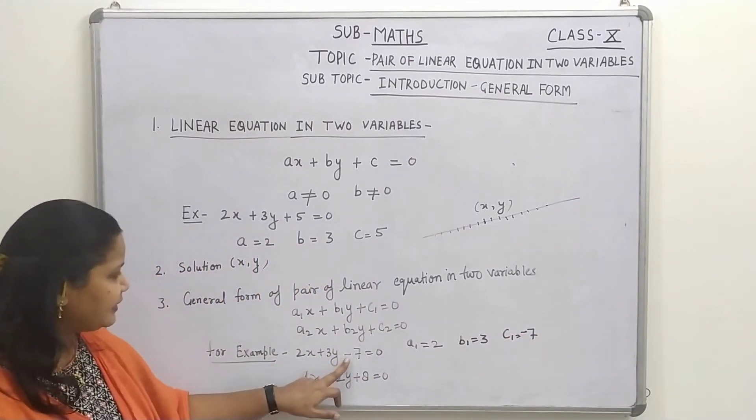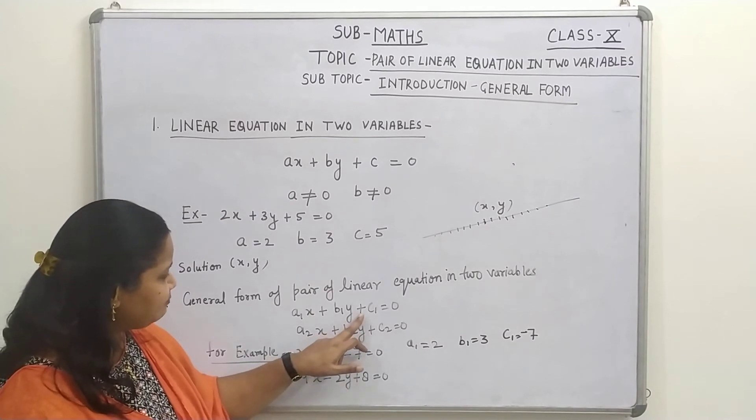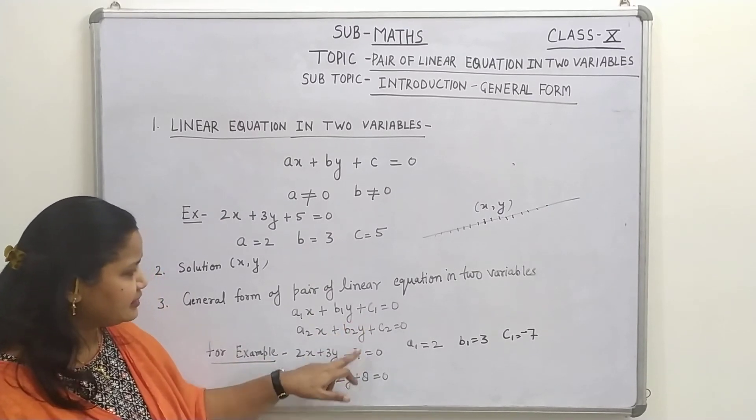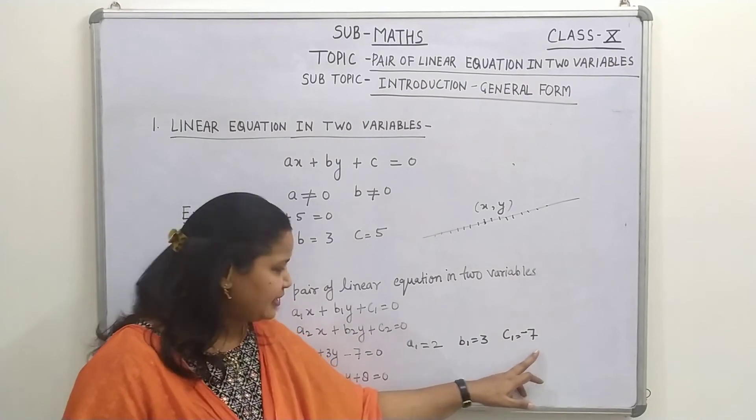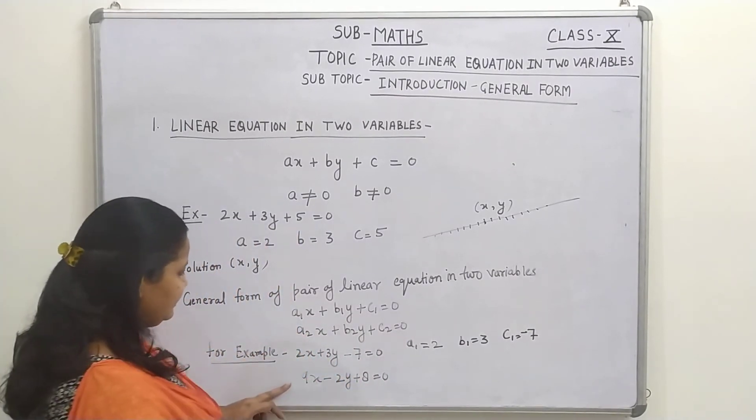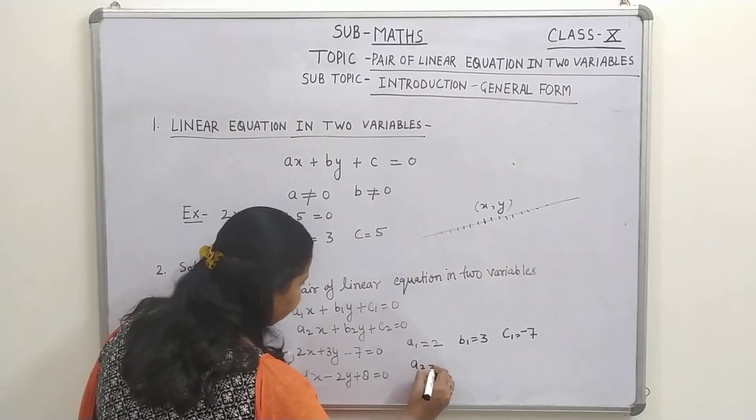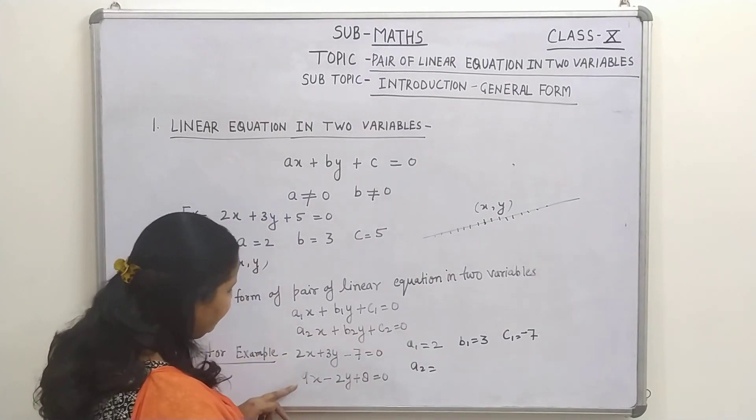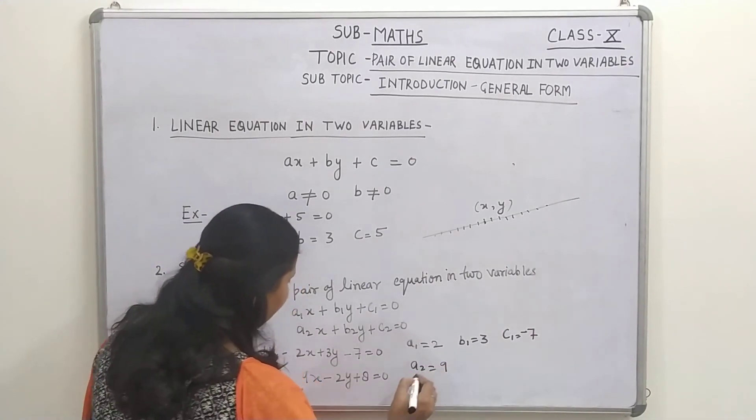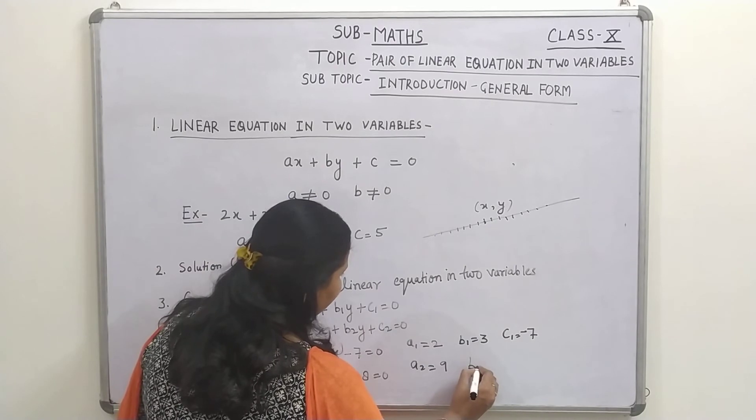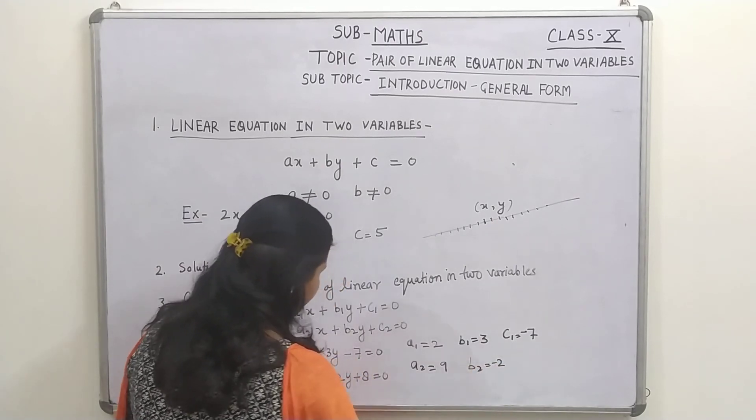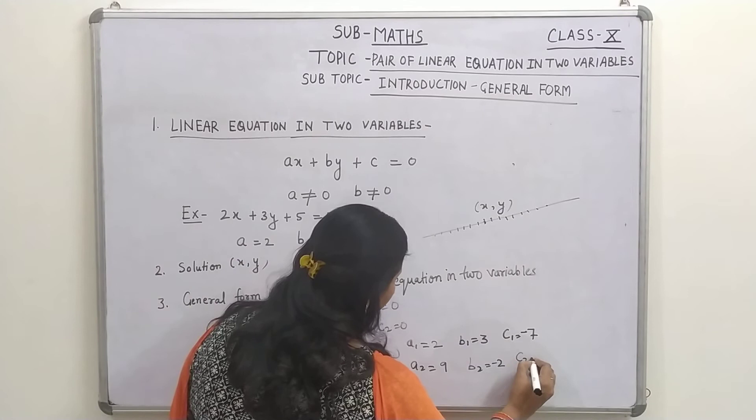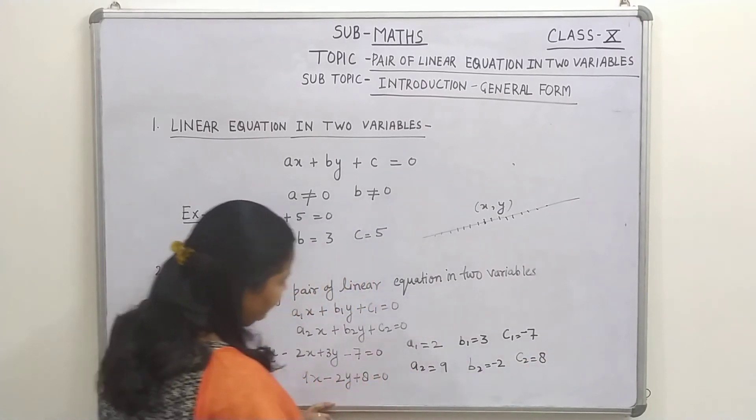Children, don't forget this negative sign because we are comparing it plus C1 and here it is minus 7. That's why C1 equals to minus 7. Now, here, A2, just like this, A2 equals to 9 and B2 equals to minus 2 and C2 equals to 8.